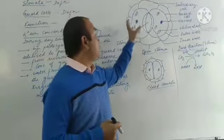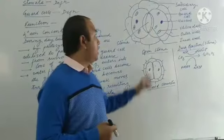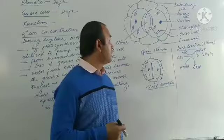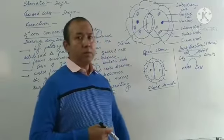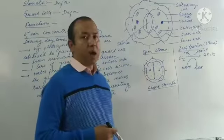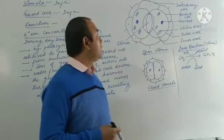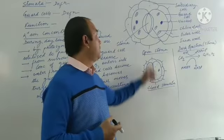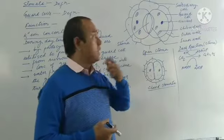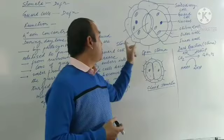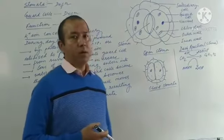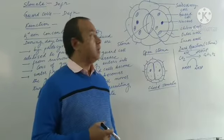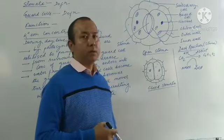The stomata remain surrounded by cells called subsidiary cells. It consists of two kidney-shaped cells called guard cells. If you are asked about guard cells, they are the two kidney-shaped cells which enclose the pore that we call the stomata. These guard cells are responsible for regulating the opening and closing of stomata.